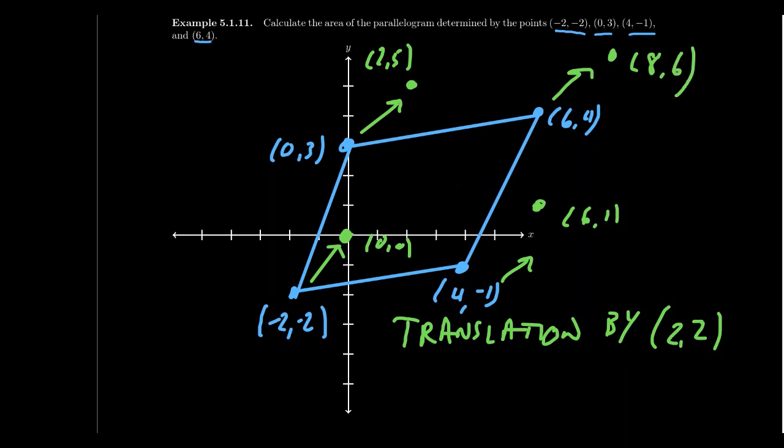And so this forms a parallelogram now. Let me try that again. I'll connect the dots one more time. We get a parallelogram. And this parallelogram will be congruent to the original parallelogram. And what we're interested in is these two vectors right here. So this is the vector u, and this is the vector v.